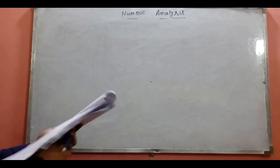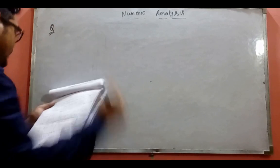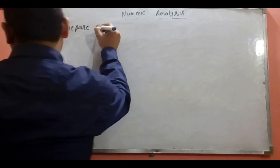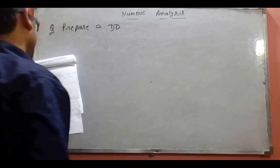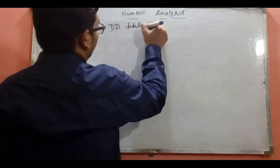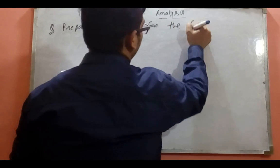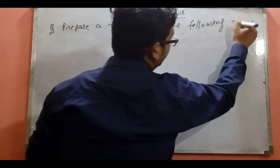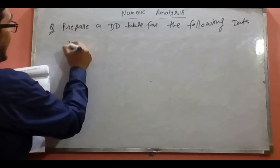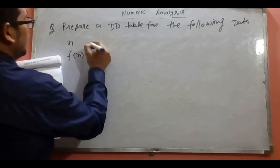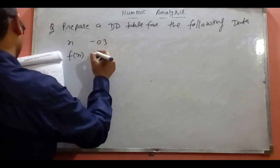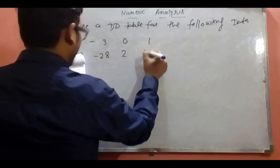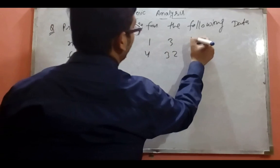Prepare a divide difference table for the following data: x values are -3, 0, 1, 3, and 4; and f(x) values are -28, 2, 4, 32, and 70.